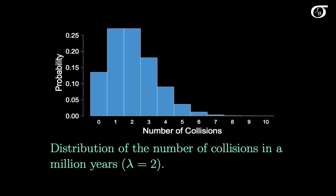If we calculated the probability of all the different possible values and plotted them out, we'd get something like this. It's tough to do for all of them since this goes off to infinity, but if we chop it off at 10, this is what it looks like. We just calculated the probability of getting exactly 1, which was approximately 0.27. We can see the relative likelihood of these different numbers of occurrences, and of course once you start getting up to a big number, that's quite unlikely.